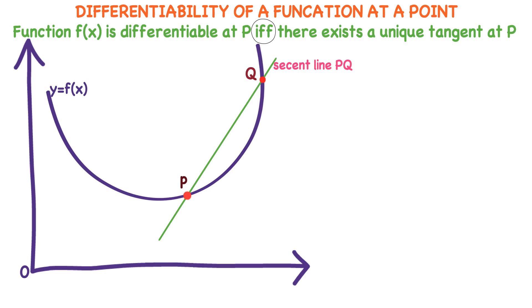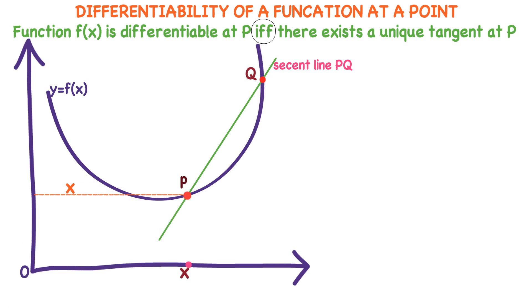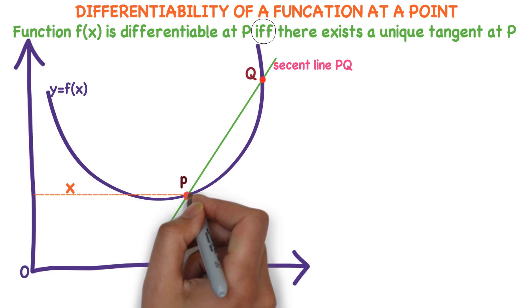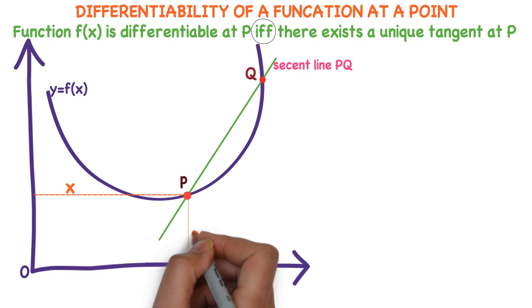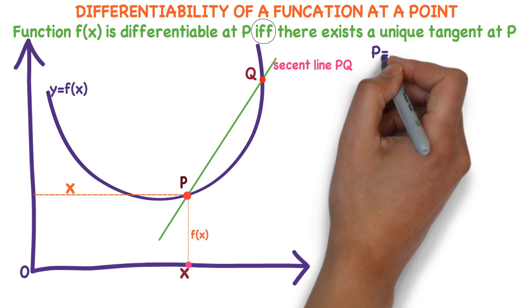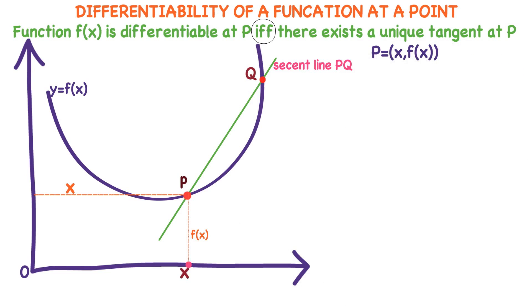Now observe the diagram. What is the point P? P is a point which is at a distance of x units from the y-axis. This length is the height of the curve, which is f of x. So point P is x comma f of x.